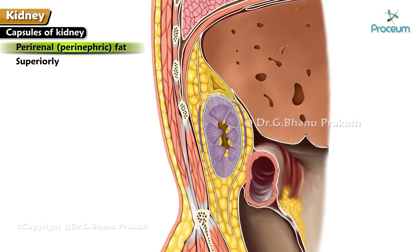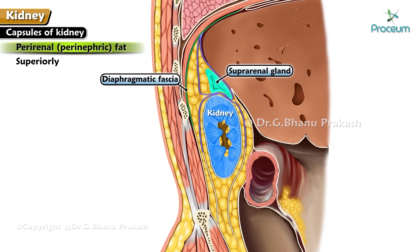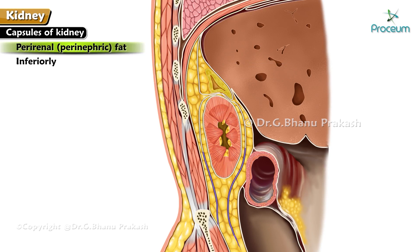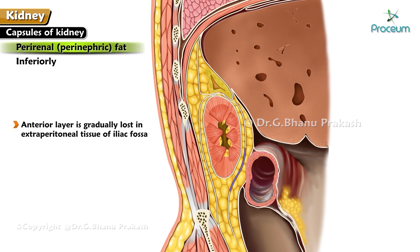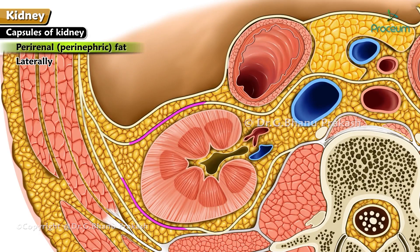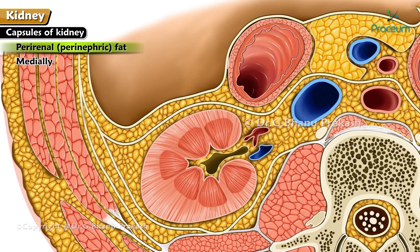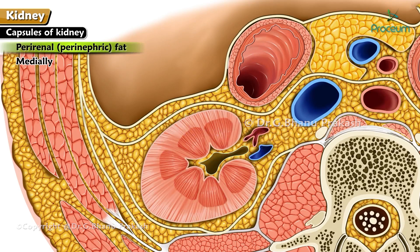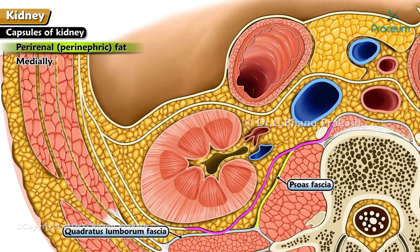Superiorly, the two layers fuse at the upper end of the kidney, re-split to enclose the suprarenal gland in a separate compartment, and then fuse with the diaphragmatic fascia. Inferiorly, the two layers remain separate and enclose the ureter; the anterior layer is lost in the extraperitoneal tissue of the iliac fossa while the posterior layer merges with the fascia iliaca. Laterally, they unite firmly and become continuous with the fascia transversalis. Medially, the anterior layer blends with connective tissue surrounding the aorta, while the posterior layer is attached to the psoas fascia and quadratus lumborum fascia.